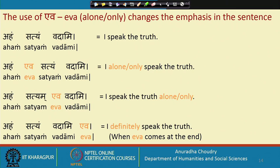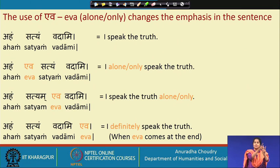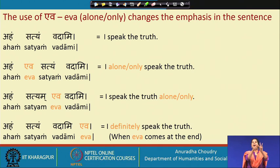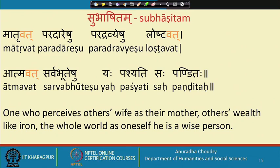Aham satyam vadami — I speak the truth. Aham eva satyam vadami — I alone speak the truth. Aham satyam eva vadami — I speak only the truth. Aham satyam vadami eva — I definitely speak the truth. When 'eva' comes at the end of the sentence it emphasizes that the action is definitely undertaken. Practice: aham chayam pibami — I drink tea; aham eva chayam pibami — I alone drink tea; aham chayam eva pibami — I drink only tea; aham chayam pibami eva — no matter what, I will have my cup of tea.